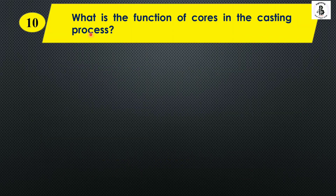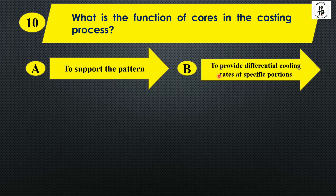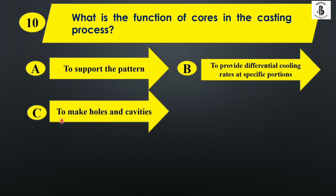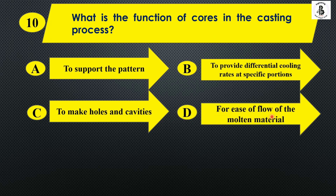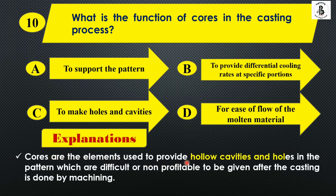What is the function of cores in the casting process? Option A: to support the pattern, Option B: to provide differential cooling rates at specific portions, Option C: to make holes and cavities, and Option D: for ease of flow of the molten materials. Cores are elements used to provide hollow cavities and to make holes into the castings. So the right answer is Option C.